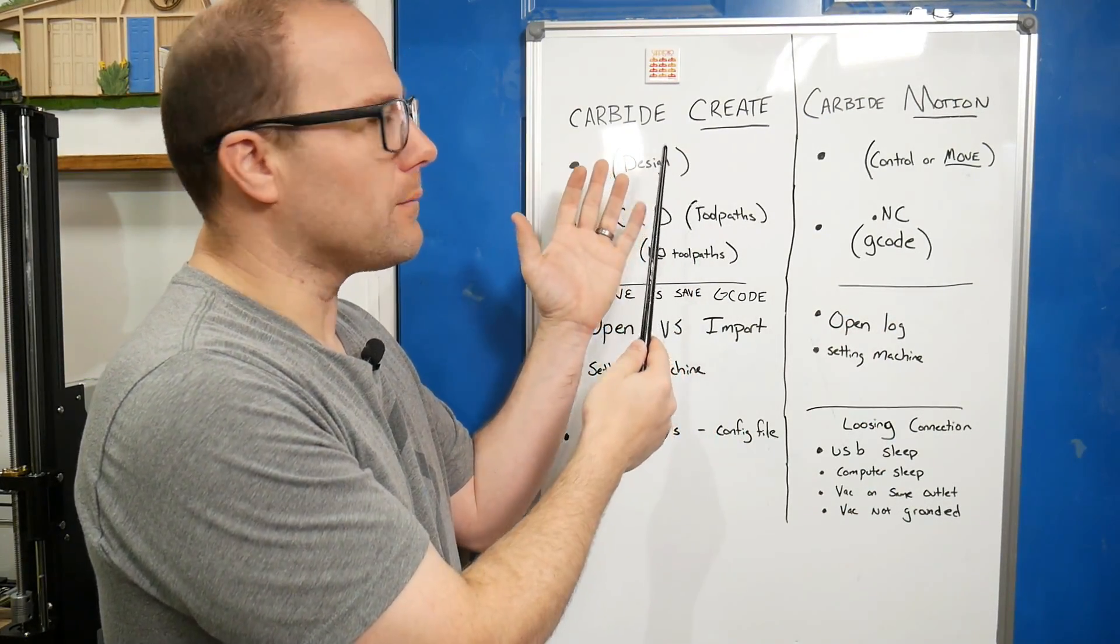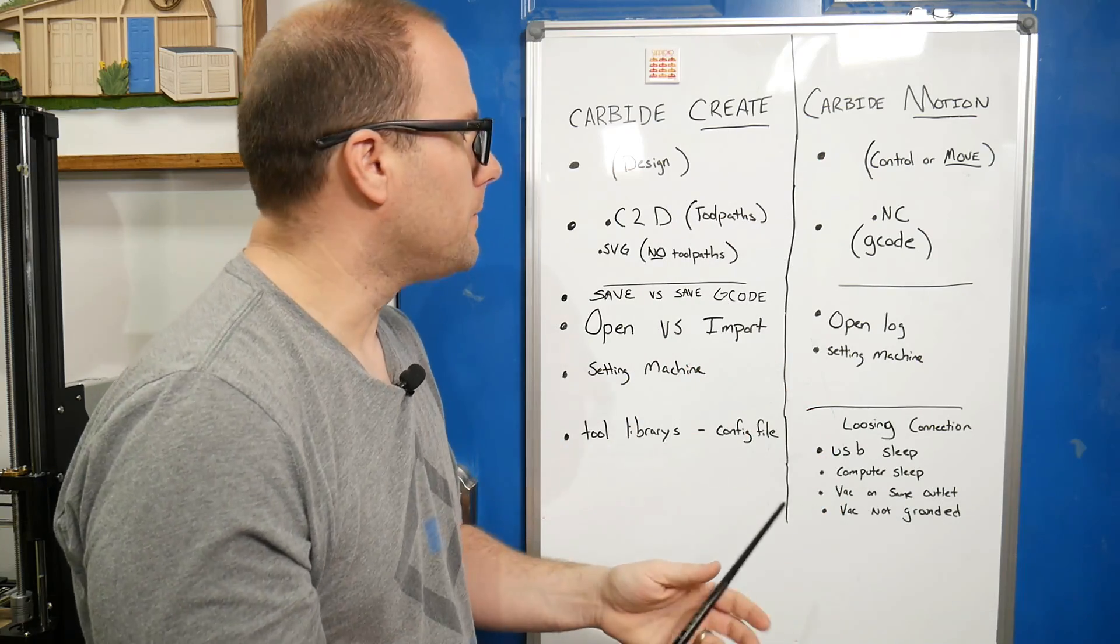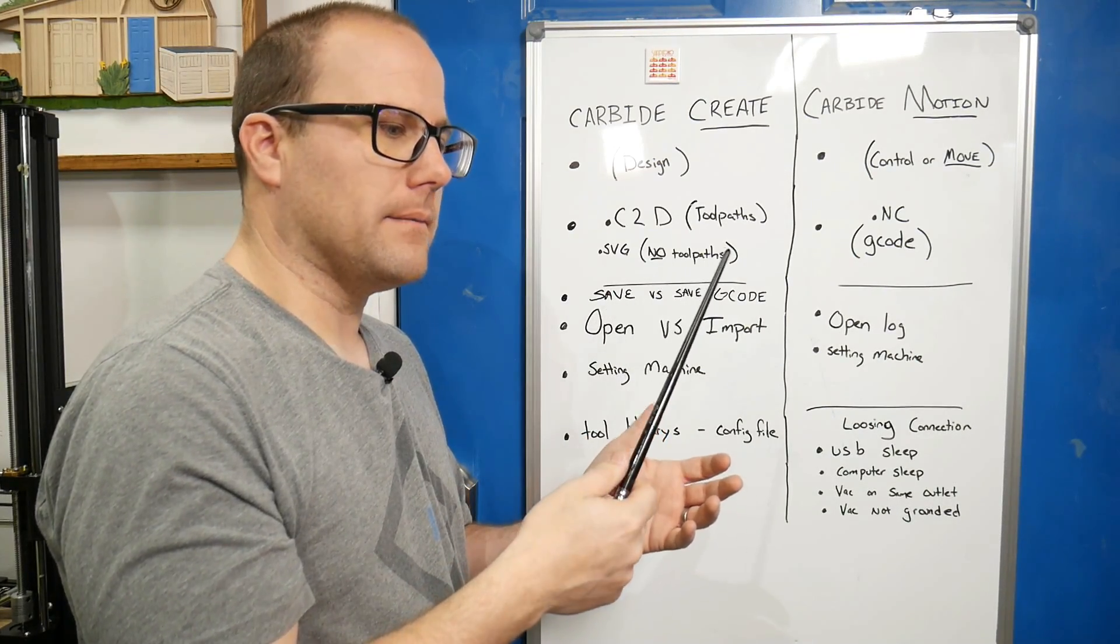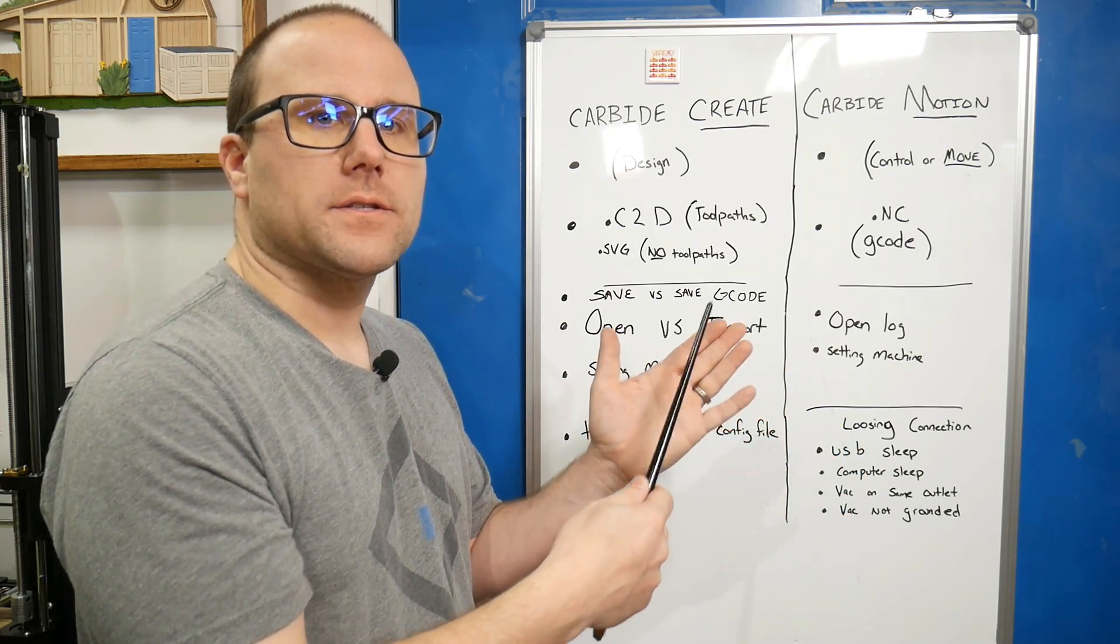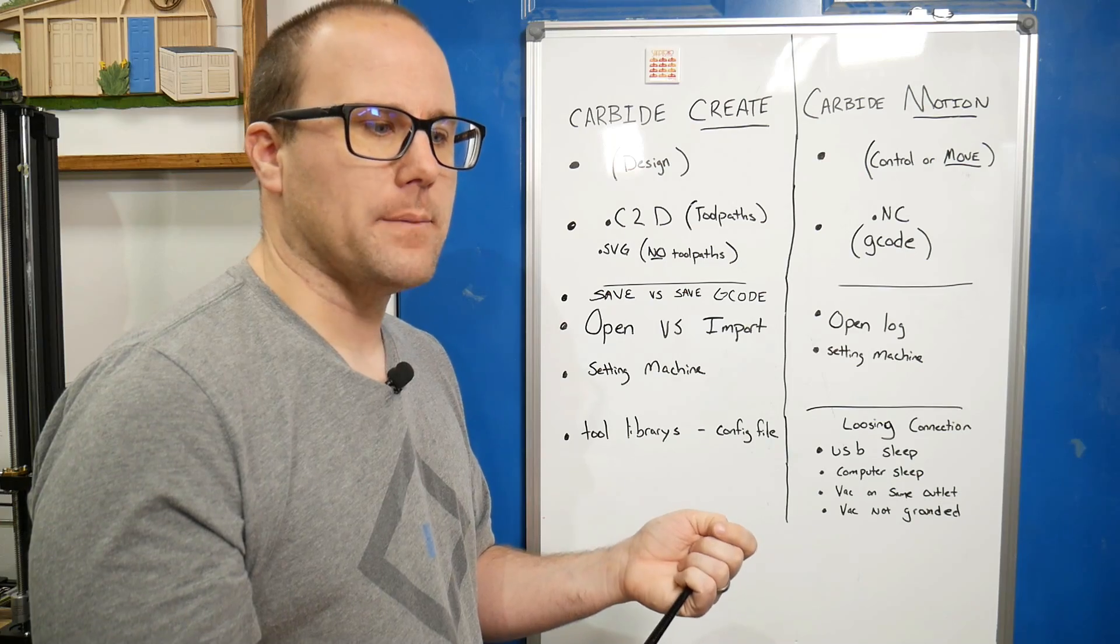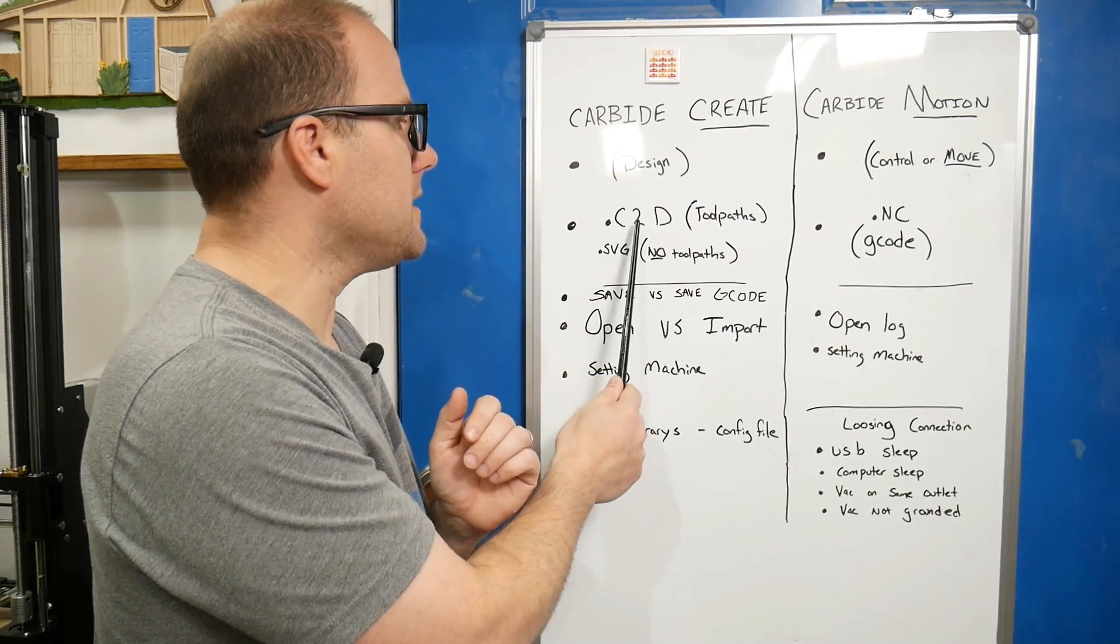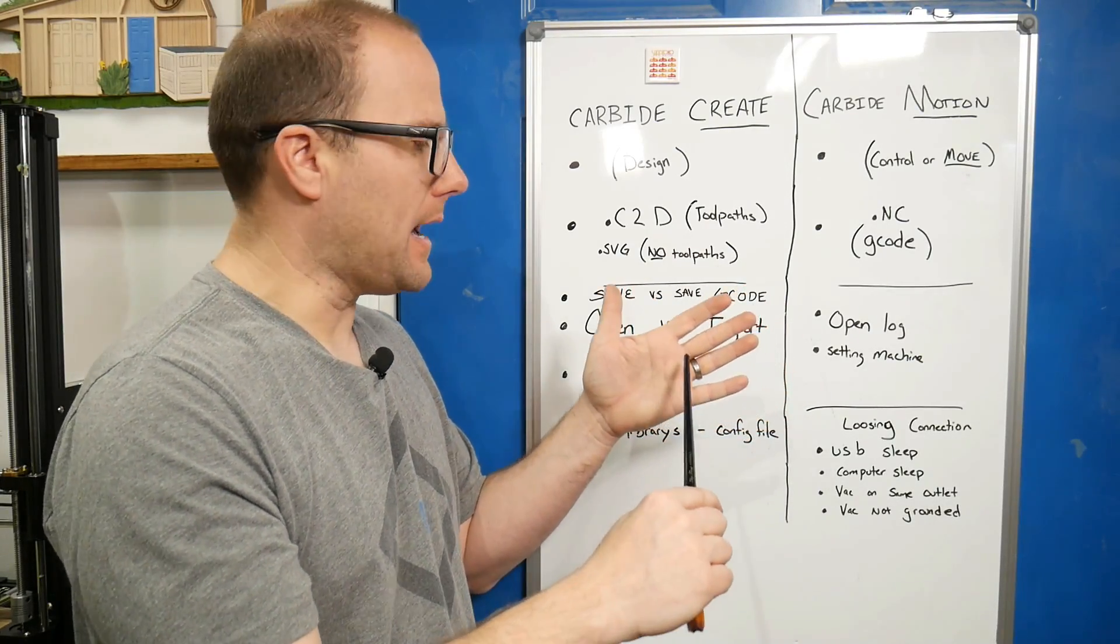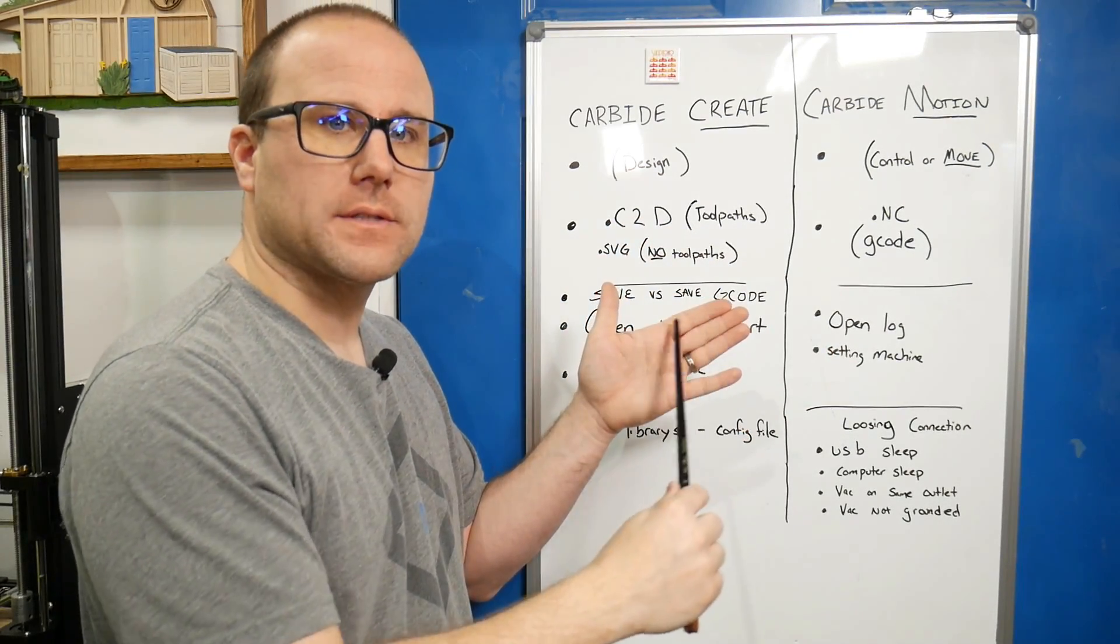Once we make our design and take that design file and put it into Carbide Motion, that will then start cutting out our material. On Carbide Create, the file extension is .c2d. That contains tool paths - it's going to have our design and the paths where the machine will cut, where the tool will actually move along. You'll have both sets of information.